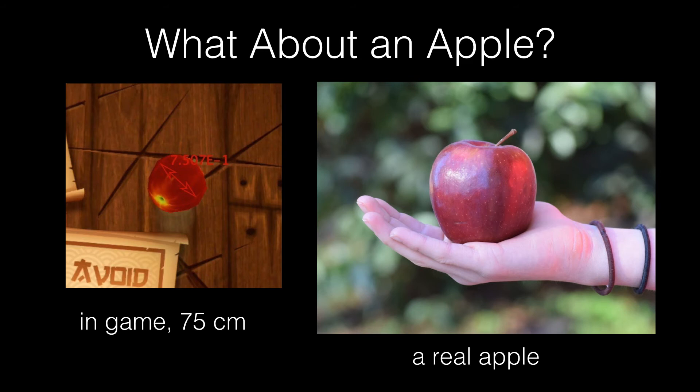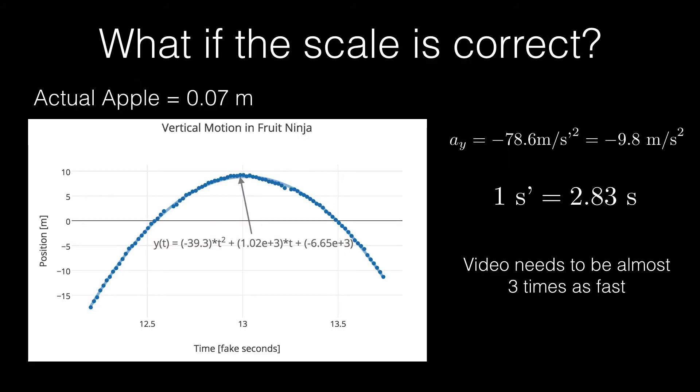But there's something else we can do. What if the scale is correct in the game? What if the apple is really apple sized? In that case, there has to be something to make the acceleration different. And that's the time scale. So I can either have the time scale as what I would expect. And then I could find out what distance scales there are. Or I could say the distance scale is correct and find out the time scale. So here's the same plot.